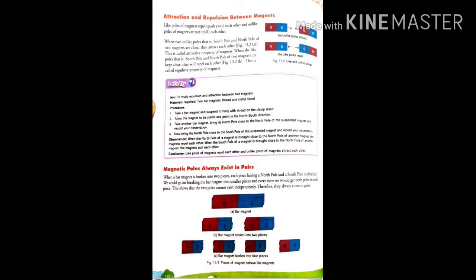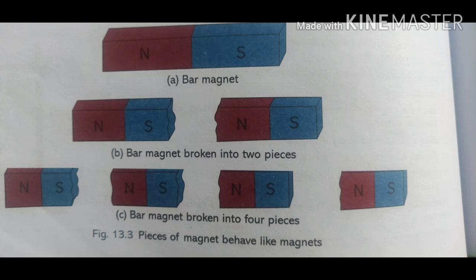We could go on breaking the bar magnet into smaller pieces. Every time we get poles. This shows that two poles cannot exist independently—they will always exist in pairs. If you break any bar magnet into thousand pieces, each piece will have north pole and south pole.